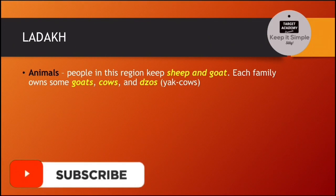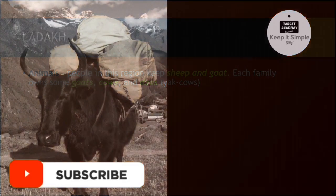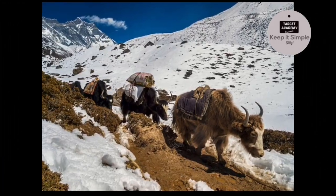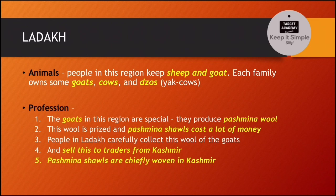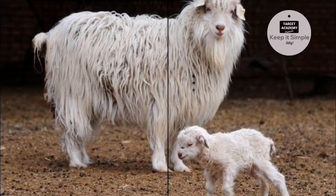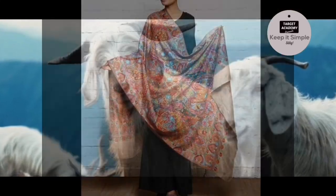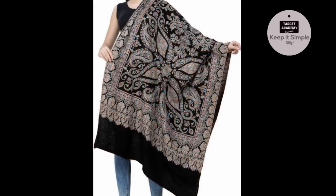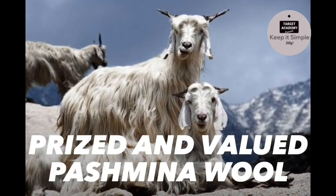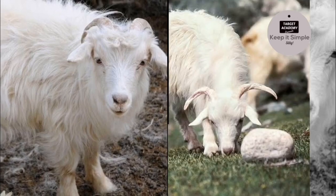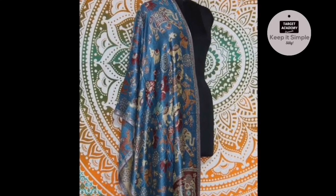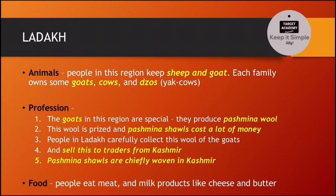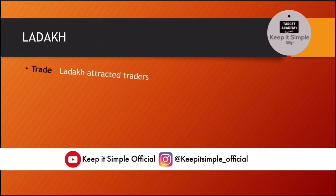इस region में लोग sheep और goat पालते हैं, और हर family में almost goats, cows और yaks मिल जाएंगे। इस region की goats बहुत ही special होती हैं क्योंकि ये पश्मीना wool produce करती हैं। Generally wool sheep से आता है, लेकिन पश्मीना wool goat से आता है। ये wool बहुत ही ज़्यादा prized है, और पश्मीना shawls जो इस wool से बनाई जाती हैं, इसलिए people in Ladakh carefully collect this wool of the goats and sell this to traders from Kashmir. Kashmir के लोग generally पश्मीना shawls को weave करते हैं। People eat meat and milk products like cheese and butter, क्योंकि वहाँ पे ज़्यादा vegetation नहीं होता — mostly animal breeding चलती है।